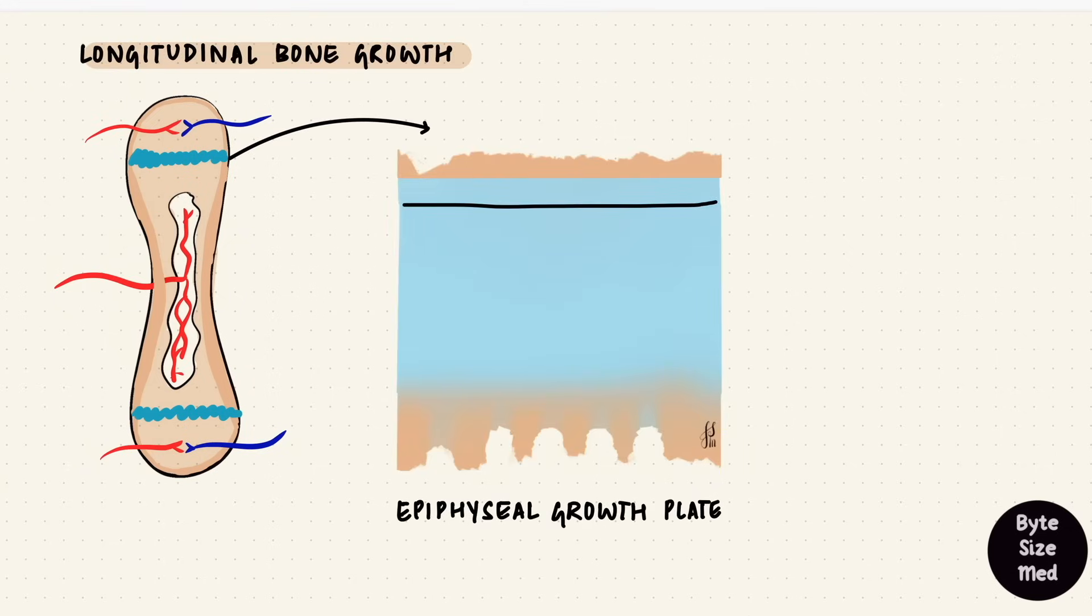The growth plate thus can be divided into zones, histological zones. It's similar to how this process just happened. Bone is going to replace cartilage. So there's a zone of reserve cartilage towards the epiphyseal end. That's just typical hyaline cartilage with random chondrocytes. It attaches the growth plate to the epiphysis.